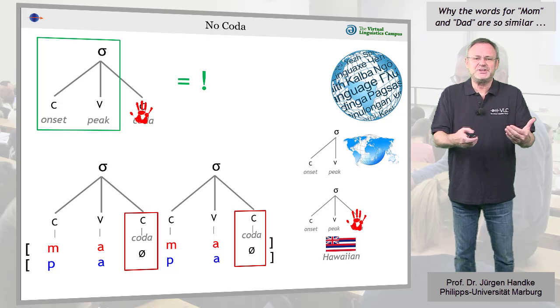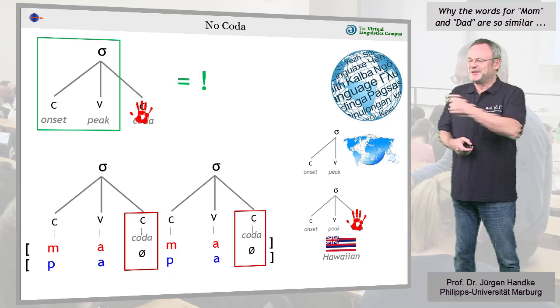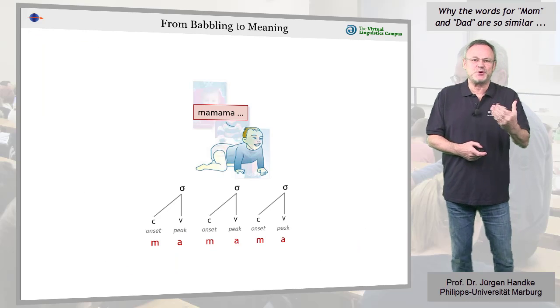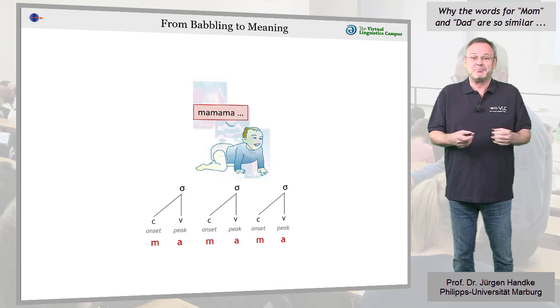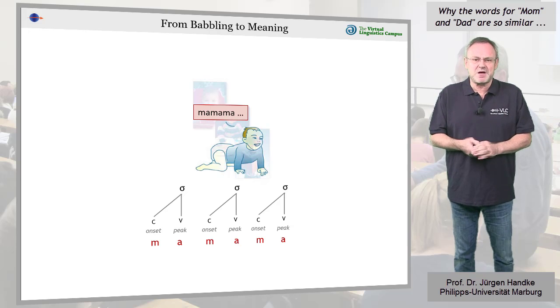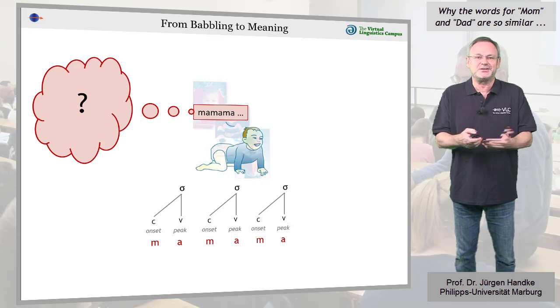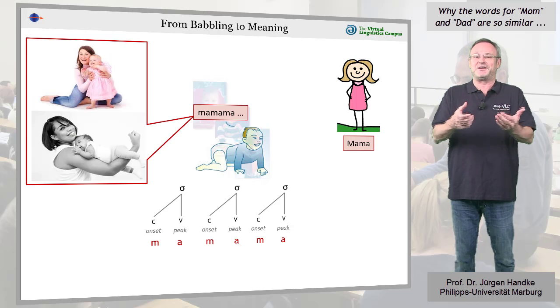And how did this open syllable babbling turn into words? Well, babies speaking this way are just playing, but adults don't hear them that way. A baby babbles mama and it sounds as if he's addressing someone, and the person he's most likely addressing so early on is his mother.